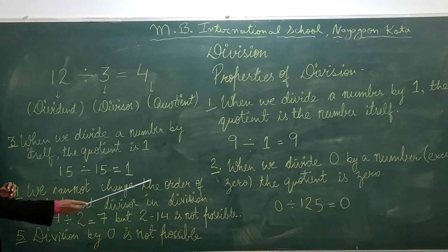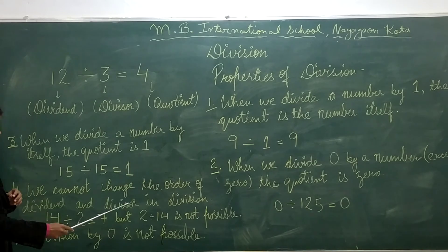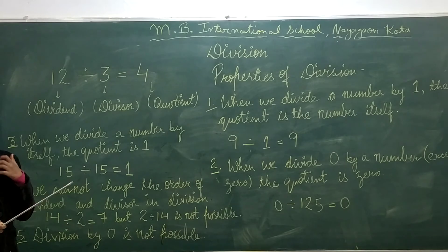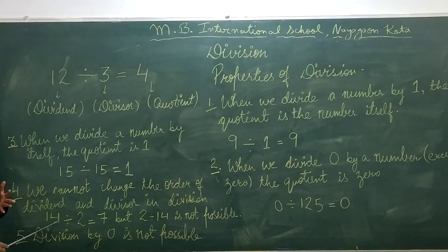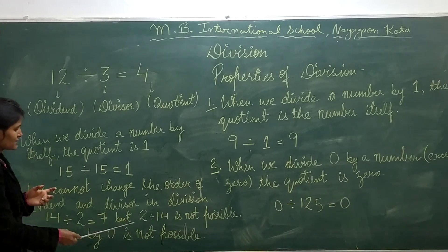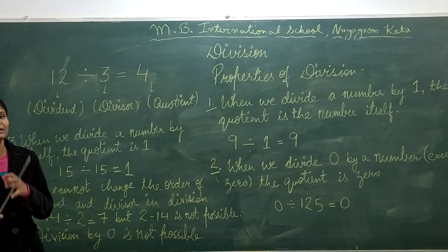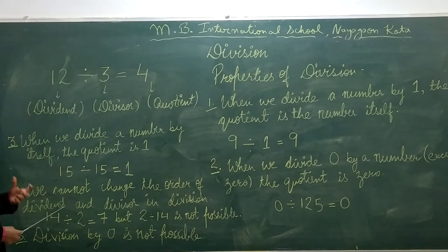Fourth, we cannot change the order of dividend and divisor in division. For example, 14 divided by 2 equals 7, but you cannot write it as 2 divided by 14. You cannot change the position or order of the dividend and divisor.